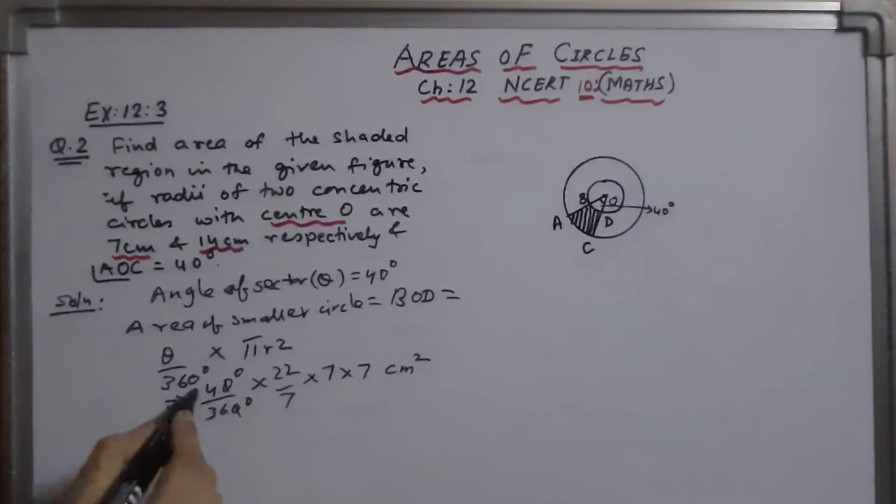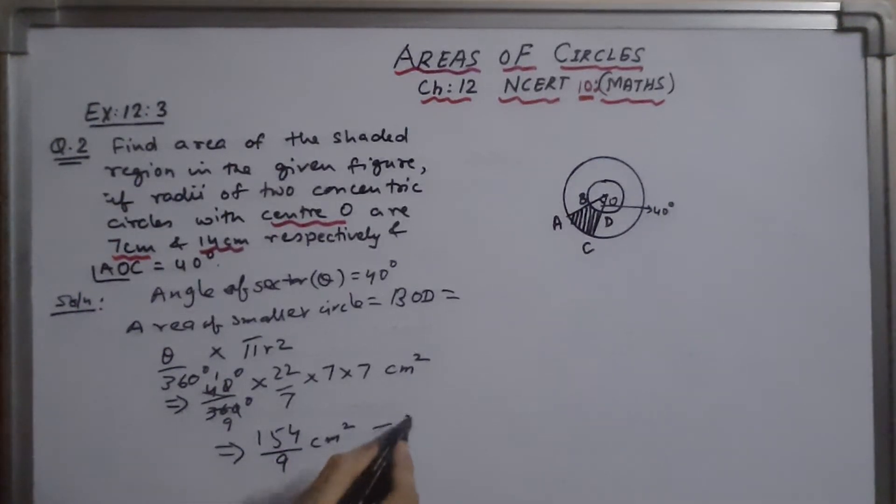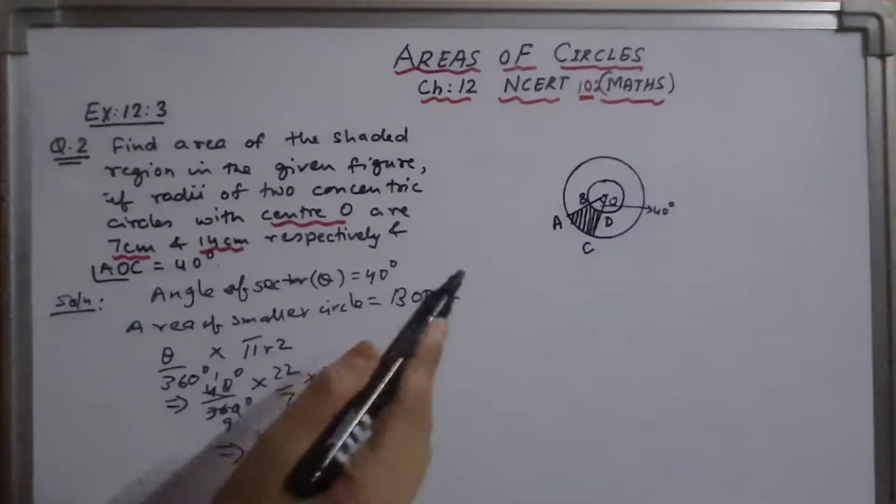On calculating, 4, 1, 9, and multiplying, we will get 154 by 9 cm square. This is our first area, that is area of smaller circle.